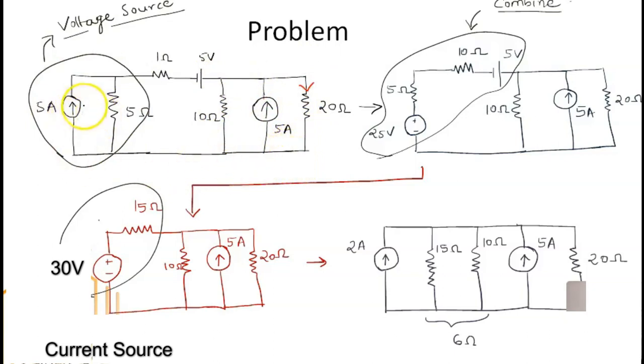So first we have a current source parallel to a resistor. We can easily convert this into a voltage source. To convert this into a voltage source, we will multiply 5 ampere by 5 ohm and we will get 25 volt voltage source in series with 5 ohm resistor. So this is what has been done over here. This is what we have, a 25 volt battery in series with 5 ohm resistor.